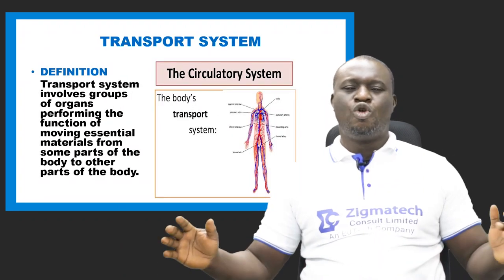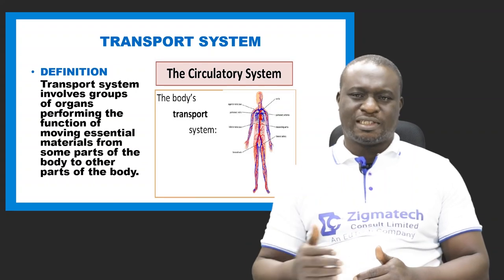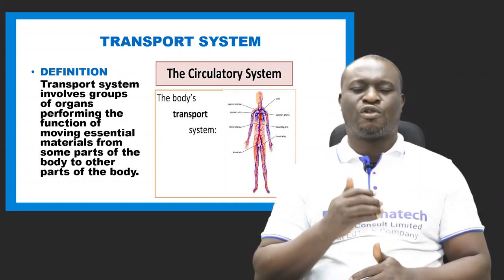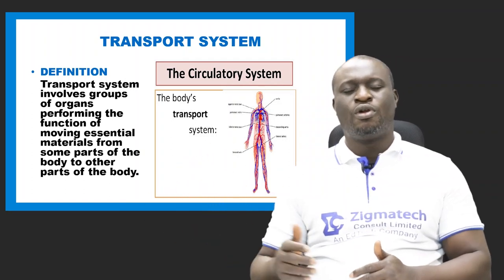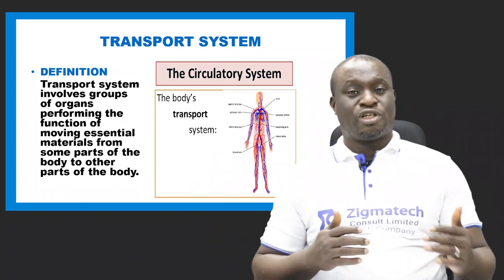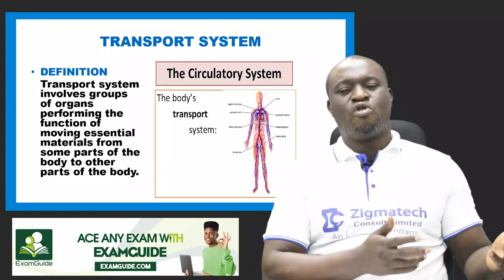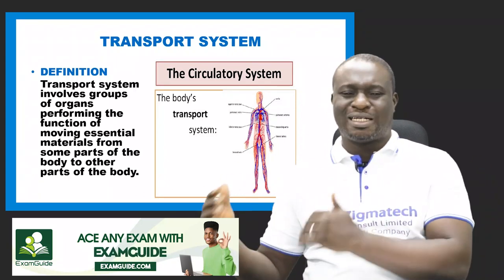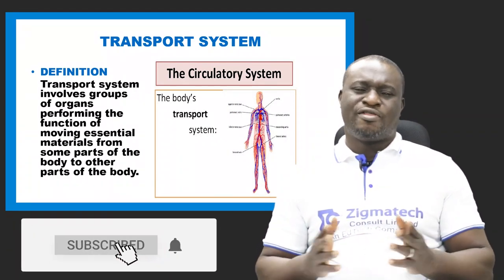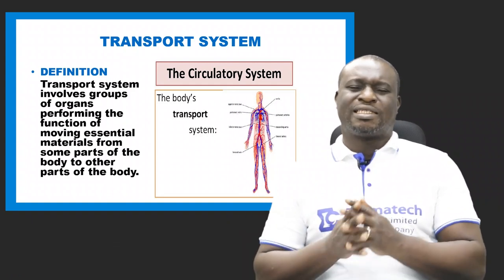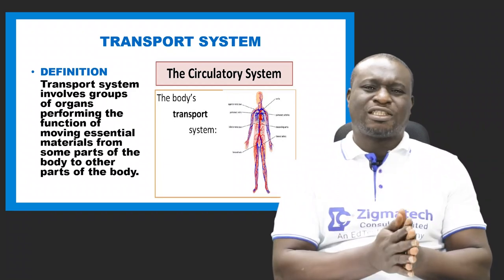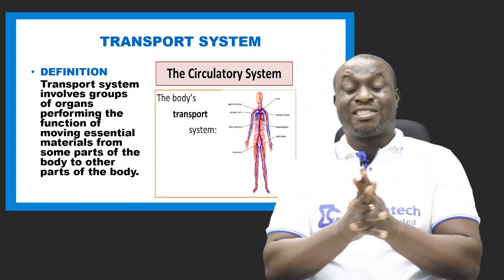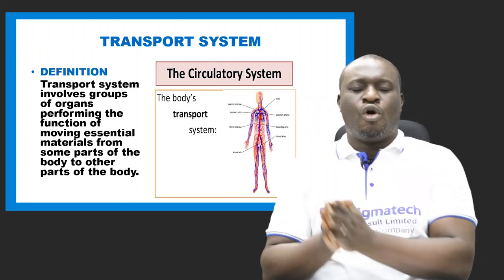Let's begin by looking at the definition of transport system. When we mean transport system in biology, we're not talking about means of carrying goods, services, or people from one place to another. In terms of biology, it has to do with the movement of essential materials. Therefore, transportation is simply the movement of essential materials from some part of the body to other parts of the body.